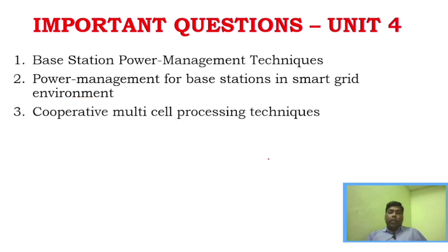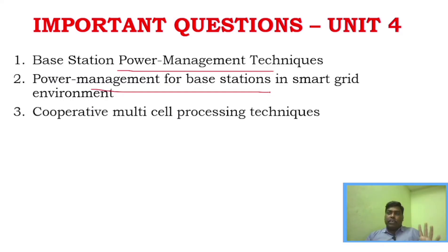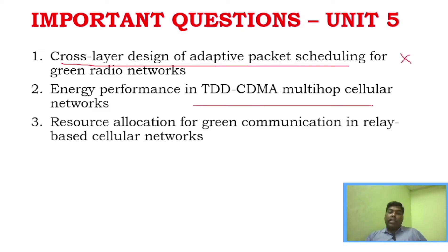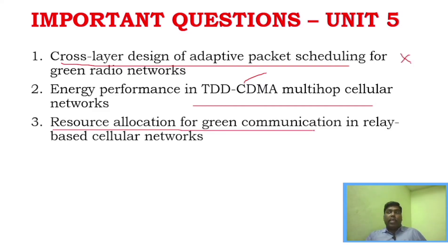For Unit 4, the three key questions are: base station power management techniques, power management for base stations and smart grid, and cooperative multi-cell processing techniques. For Unit 5, once again three questions: cross-layer design and adaptive packet scheduling for green data networks is very important, TDD-CDMA multi-cellular networks, and resource allocation for green communication in relay-based cellular networks.